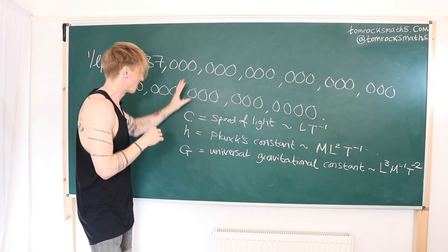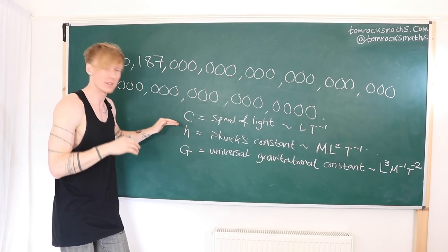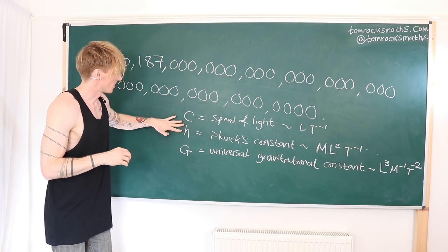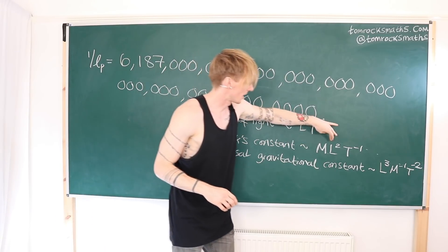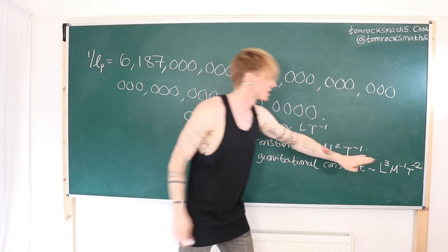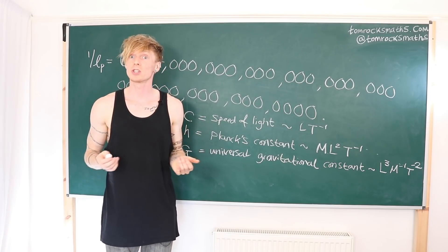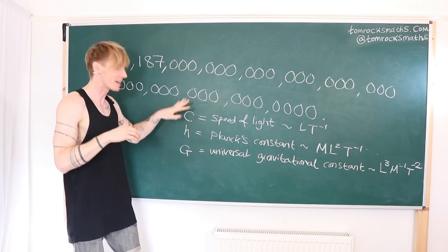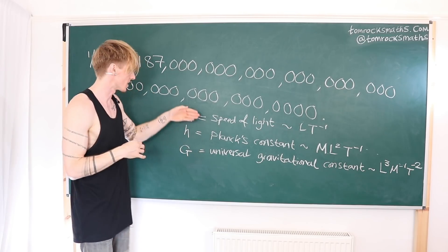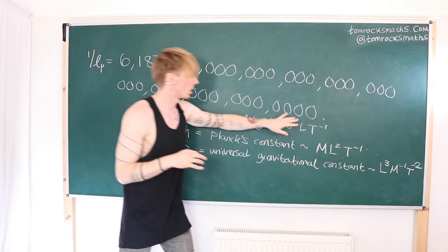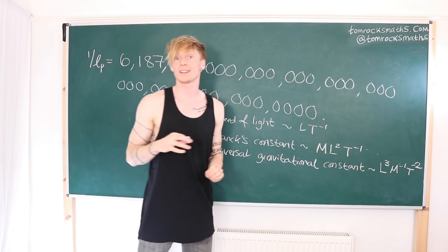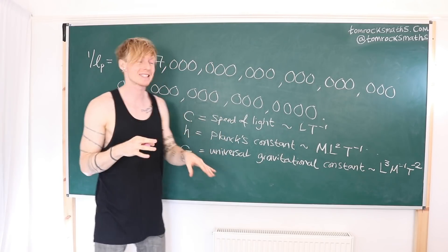So we have three of the most, if not the most, fundamental constants of physics: the speed of light c with units L t minus one; Planck's constant h with units mass length squared time minus one; and the universal gravitational constant g with units L cubed mass to the minus one time to the minus two. The magic happens when we try to combine these three constants to get a length scale — this is in fact a scaling analysis on these three variables. Using our knowledge of their units, we want to combine them so that mass cancels out, time cancels out, and we're left with a length scale — that will be our Planck length LP.